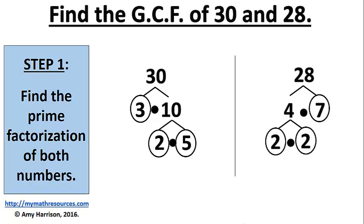So the prime factorization of 30 is 2 times 3 times 5, and the prime factorization of 28 is 2 times 2 times 7.